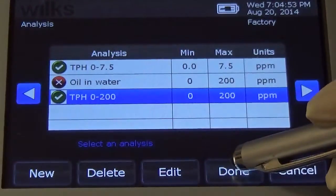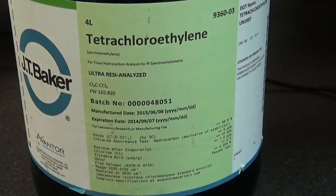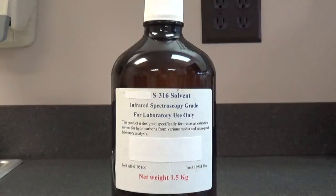Select Done again. For Tetrachloroethylene, we recommend JT Baker Solvent as this is the only solvent available specific for infrared analysis. We cannot guarantee results with any other solvents. Most analysis issues are due to using the wrong solvent or solvent that has been contaminated. An alternate choice to perchloroethylene is S316 solvent.